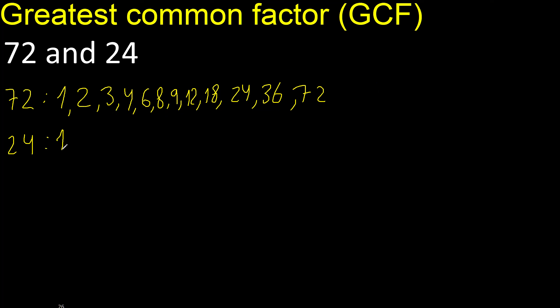Factors. Always start with 1. 24 divided by 1 is 24. Divided by 2 is 12. Divided by 3 is 8. Divided by 4 is 6.